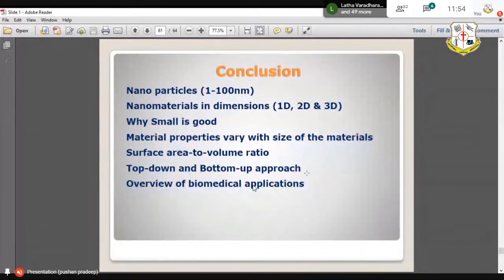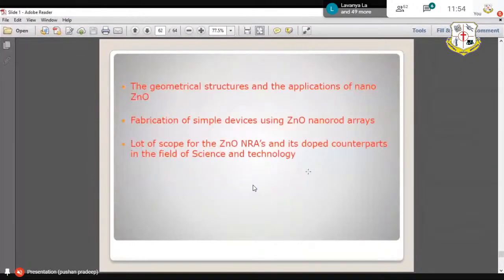We have seen the geometric structures and applications of zinc oxide and the fabrication of simple devices. They're all very simple devices using zinc oxide nanorod nanostructure and there are a lot of scopes for zinc oxide nanorods. It depends upon the counterparts in the field of science and technology. With this I end my lecture here. Thank you all for listening to this lecture.